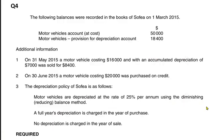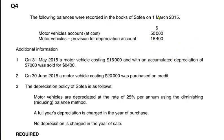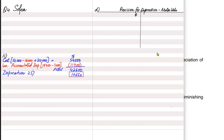The provision for depreciation, also known as accumulated depreciation, is a contra asset — it reduces the value of the asset. Because it is a contra asset, the balance brought down always comes on the credit side. At the start of the year, the provision of 18,400 appears as a credit balance brought down.